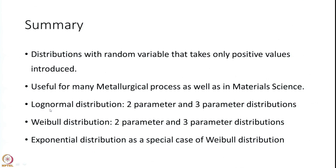I would like to let everyone know that these are not the only distributions useful for positive random variables in metallurgy and material science. There are many such distributions: one is the Birnbaum-Saunders distribution, there is gamma distribution, beta distribution, and many others. But right now we have introduced the most commonly useful distributions in the field of material science and metallurgical engineering. With this we complete the sessions on introducing the special random variables.